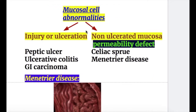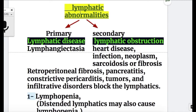Menetrier's disease falls under mucosal cell abnormalities. It is a non-ulcerated mucosa where there is a defect in the permeability that causes GI protein loss. Lymphatic abnormalities causing GI protein loss are referred to as protein-losing enteropathy.